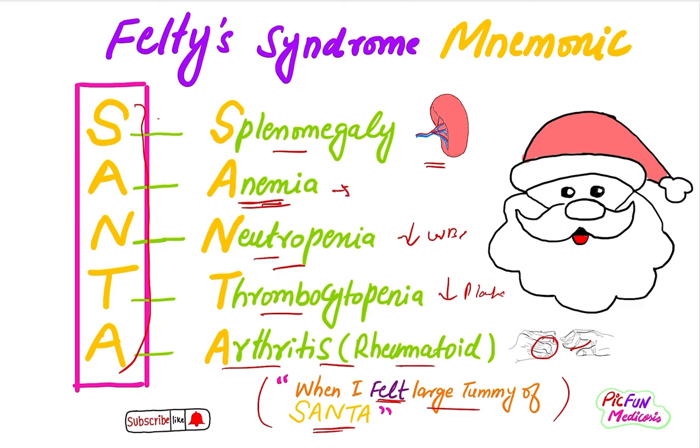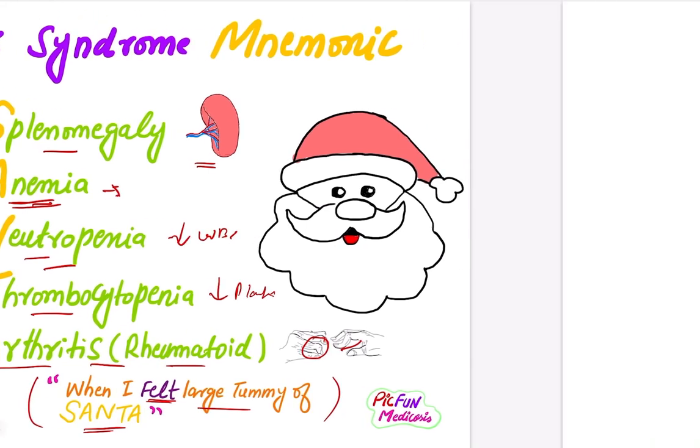In Felty's syndrome, the anemia is autoimmune hemolytic anemia and there is a positive Coombs test. Thanks for watching — please subscribe my channel for other colorful videos.